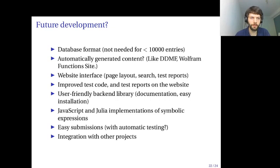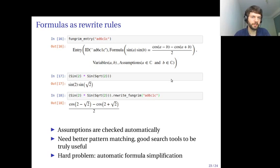Finally, an application I want to mention is using formulas in the database as rewrite rules. An example would be something like this. You could look up a formula that gives a trigonometric identity like this, rewriting a product of sines, so difference of cosines. You can actually do this right now. You can type in a formula in Pygrim and you can use the rewrite fungrim method to apply this specific formula as a rewrite rule.